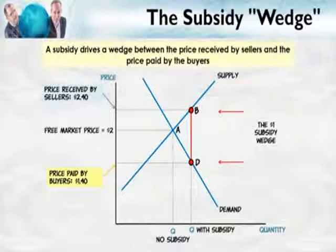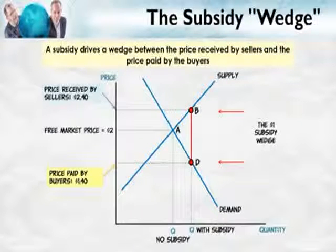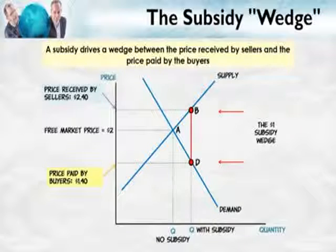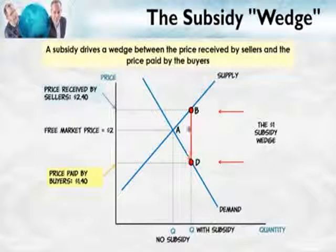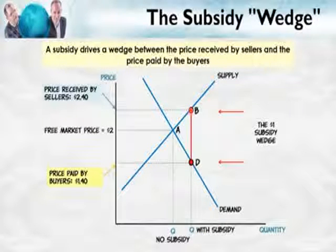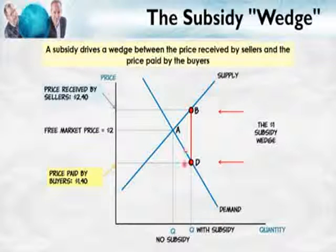Who gets the gain depends on the relative elasticities of supply and demand. Convince yourself by drawing diagrams with a really inelastic supply curve, then with a more elastic supply curve, and see what happens. Next, a tax creates revenues for the government; a subsidy creates costs. The per unit subsidy is $1.00 — the height of the wedge — multiplied by the subsidized quantity. So the total cost of the subsidy is given by this blue area in the diagram.